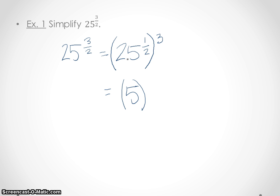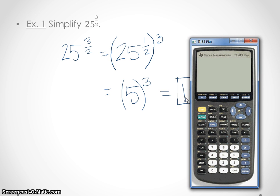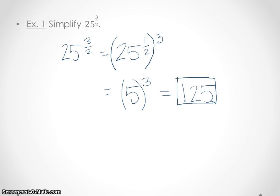Taking the 1/2 power of 25 just means taking the square root, and the square root of 25 is 5. We still have to address the power of 3 out here: 5 cubed is 125. So that's our answer. Just to verify, I'll grab the calculator — 25 to the 3/2 power, remembering to put 3/2 in parentheses — and hit enter: 125. So it clearly works.